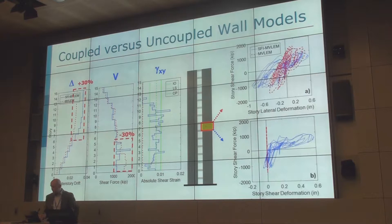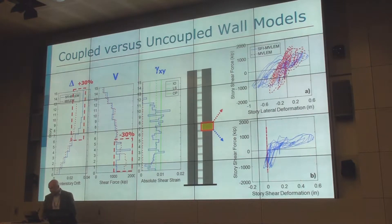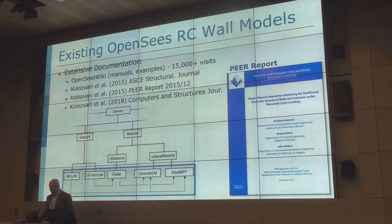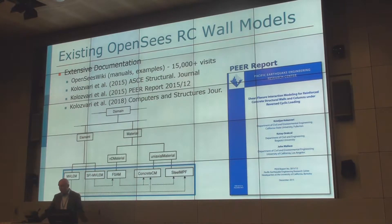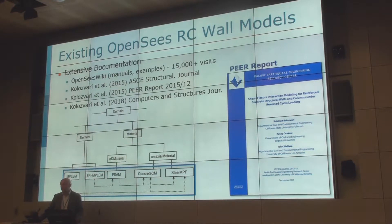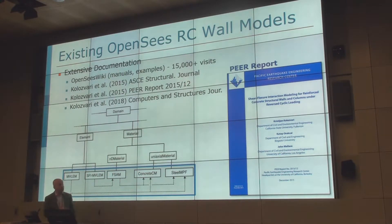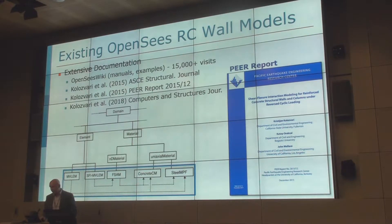The reason for that is the hysteretic behavior in shear, which you can see at the bottom. This is the stuff we did before, and it was published quite extensively. We have OpenSees wiki pages with these initial models that have had more than 15,000 visits since 2014, which makes me happy. As part of this effort, published in the PEER report in 2015, we also implemented some material models for concrete and steel, in addition to these two elements.